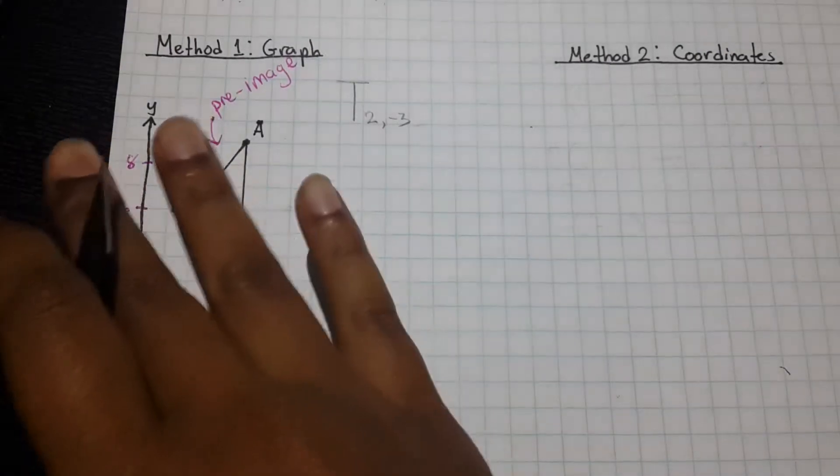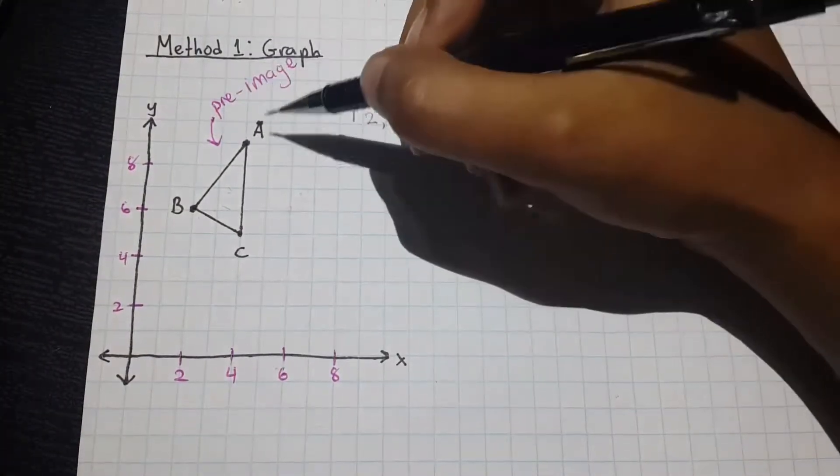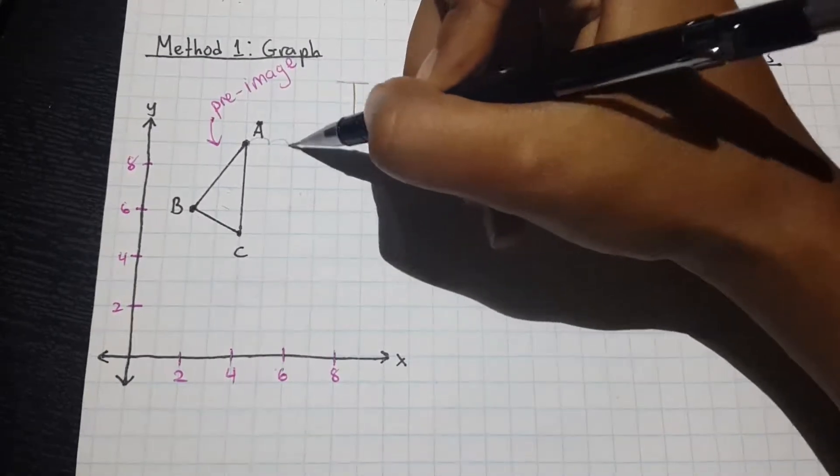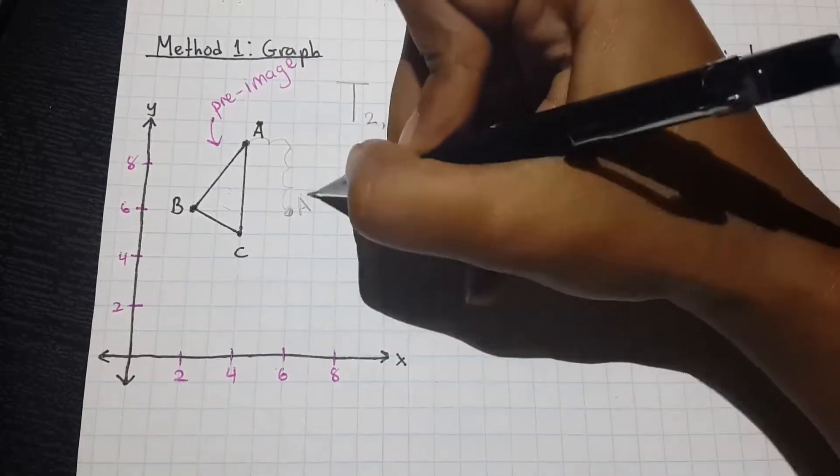So, if we're just focused on the graph, we can just kind of bounce along the coordinate plane. Let's start off with A. I'm going to go two units to the right, and then three units down, and my A prime is here.